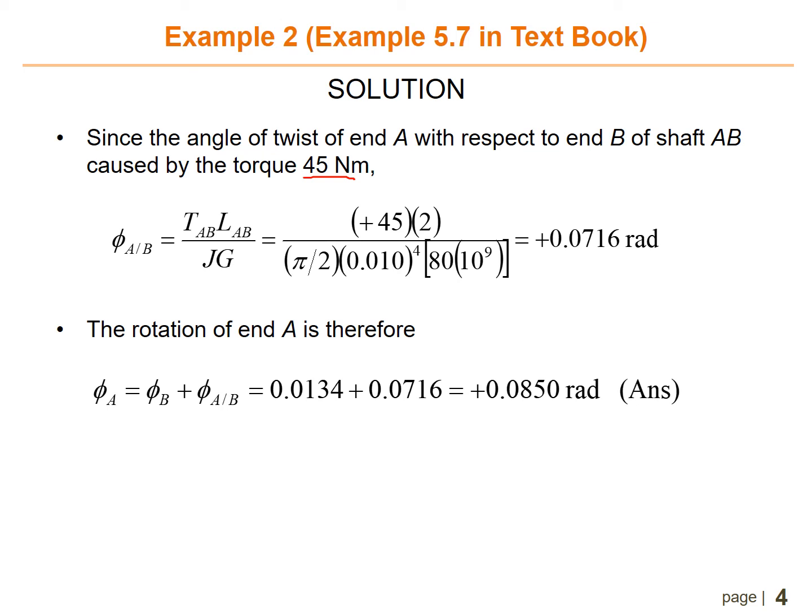Divided by pi over 2 times 0.01 to the power of 4 times G, which is 80 times 10 to the power of 9. And then you can get theta A/B equal to 0.0716 radians.